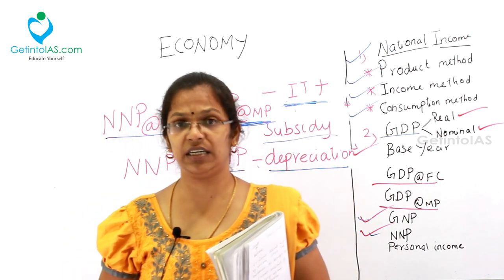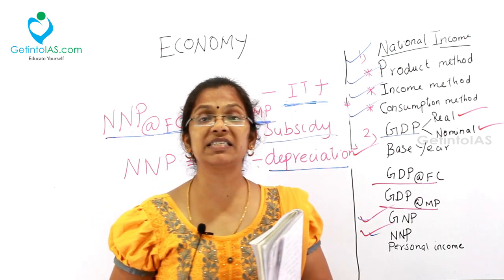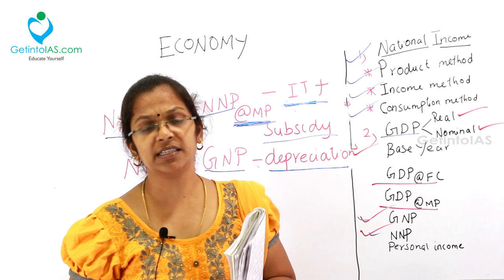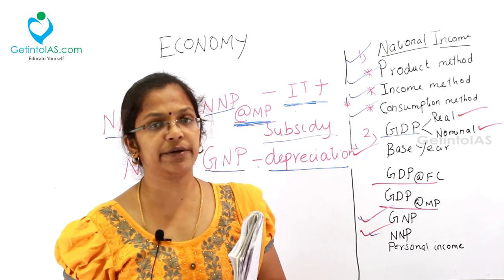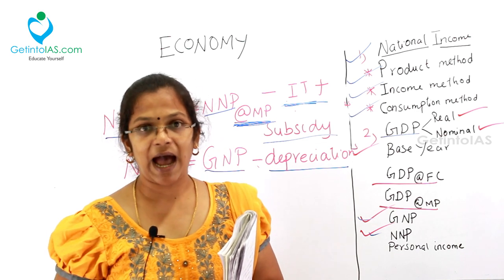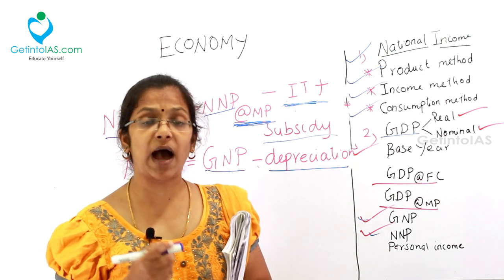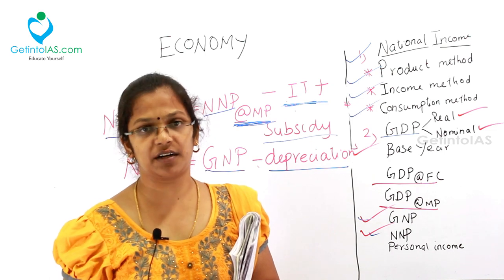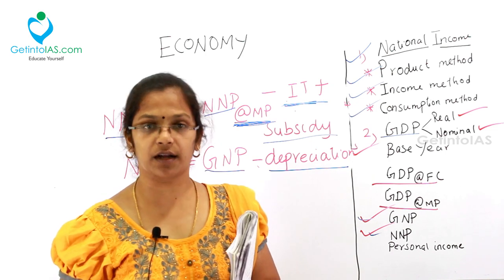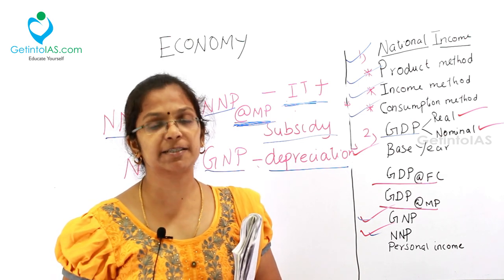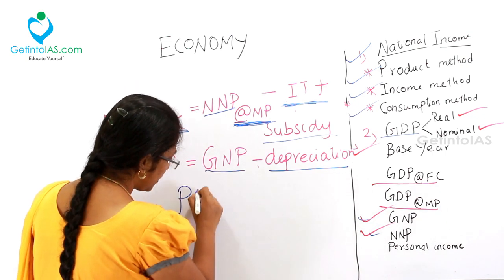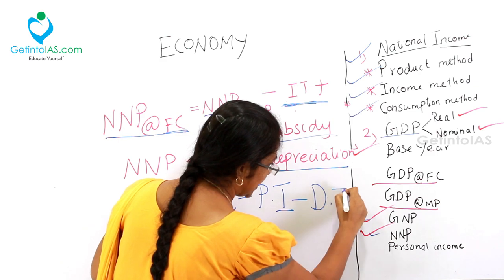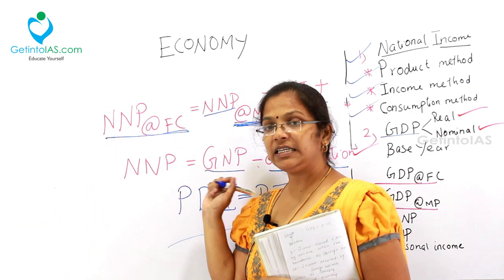The next topic is personal income and personal disposable income. Personal income means the income of an individual. Personal disposable income is personal income after the subtraction of direct taxes — the amount you have at your disposal for spending. Personal disposable income equals personal income minus direct taxes.